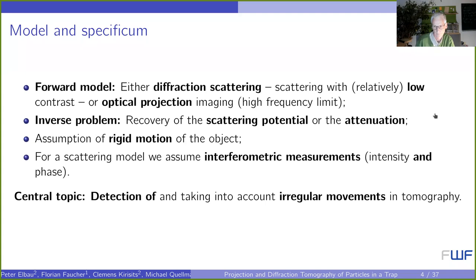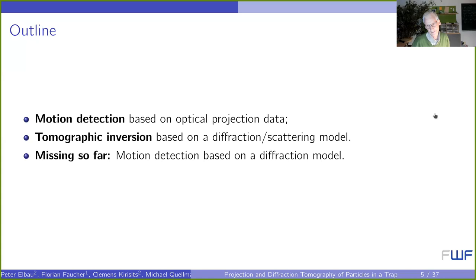Depending on the measurement data and the model, the simplest case using optical projection imaging is to reconstruct the attenuation. If we work with low-contrast scattering objects, then we reconstruct the scattering potential. We assume rigid body motion throughout — local deformations enforced by the tweezers are not taken into account. For the diffraction model, we assume interferometric measurements, so we can record intensity and phase of the object.